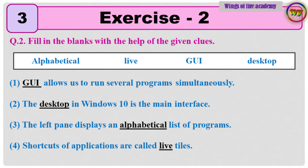Question 2: Fill in the blanks with the help of the given clues — Alphabetical, Live, GUI, Desktop. Answer 1: GUI allows us to run several programs simultaneously. Answer 2: The desktop in Windows 10 is the main interface.